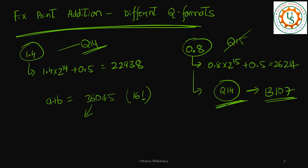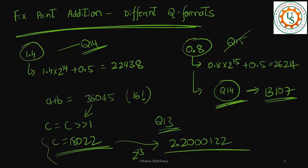C is equal to C right shift by 1. So I will do divide by 2, then I will get C is equal to 18022. You can check for saturation and all, but right now this is not required. This number now it will be in Q13 format. So now what I will do is I will divide by 2 to the power of 13. Now I am going to get 2.20012.